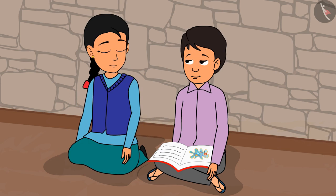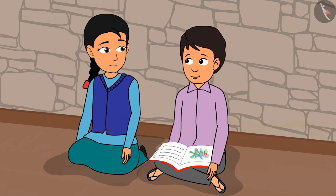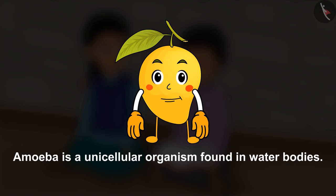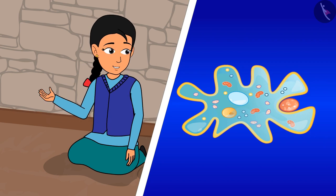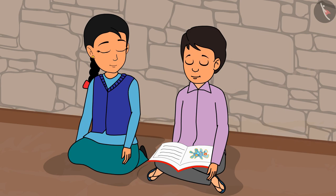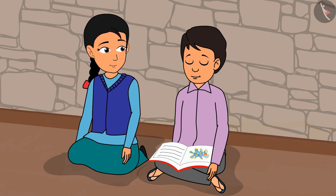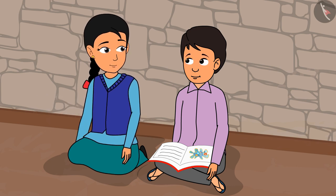Didi, is this the picture of an amoeba? I have read that this is a unicellular organism. Do they also have a digestion process? Friends, amoeba is a unicellular organism found in water bodies. Yes Ravi, amoeba and other unicellular organisms also have a digestion process. This is amazing — can you please tell me about it, Didi? There is a science exhibition in school tomorrow. There will be a lot of projects and experiments on display. A few of my classmates will show unicellular organisms like amoeba with the help of a microscope.